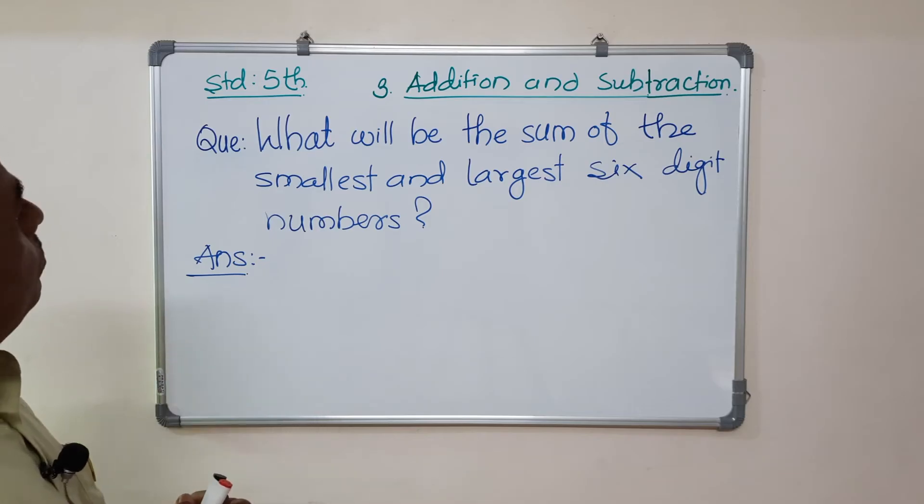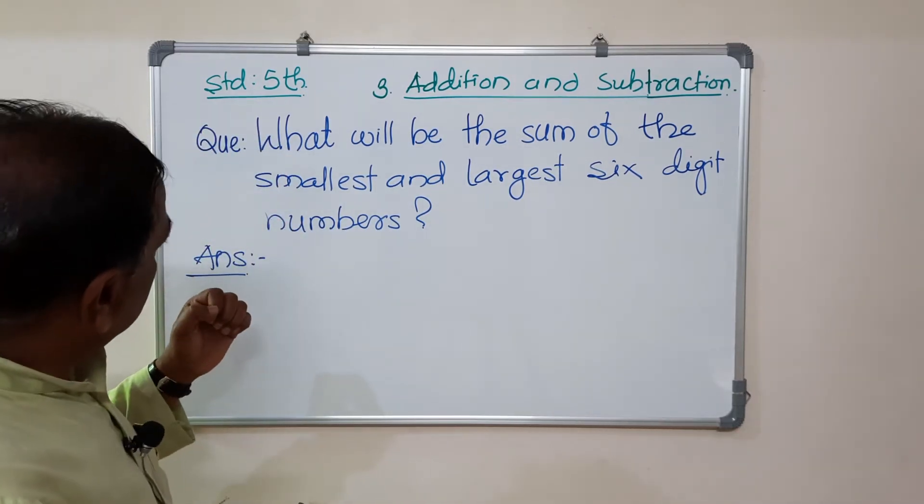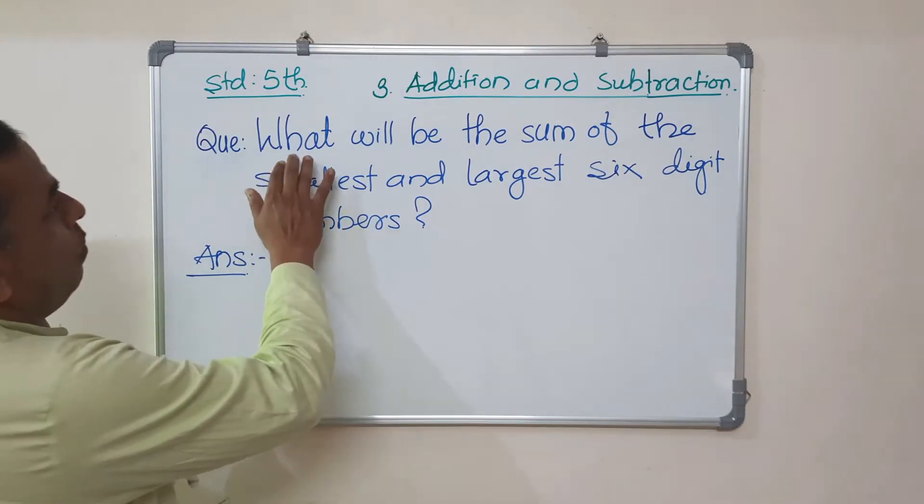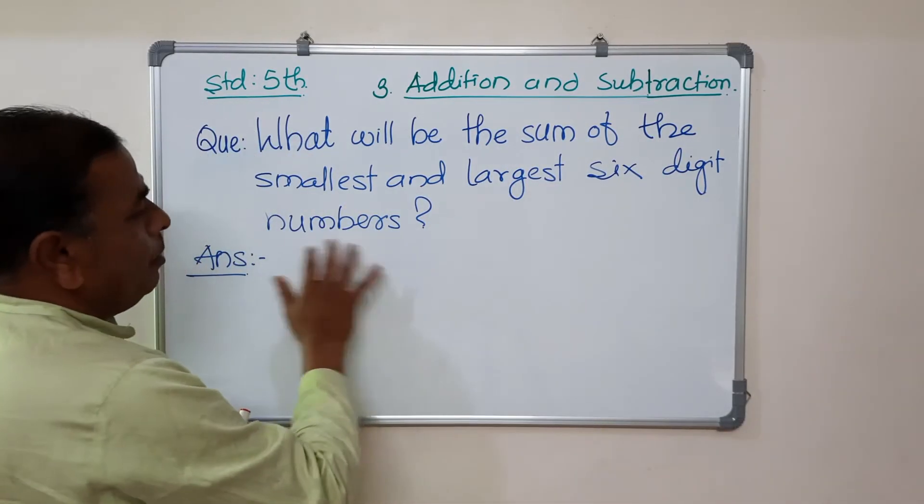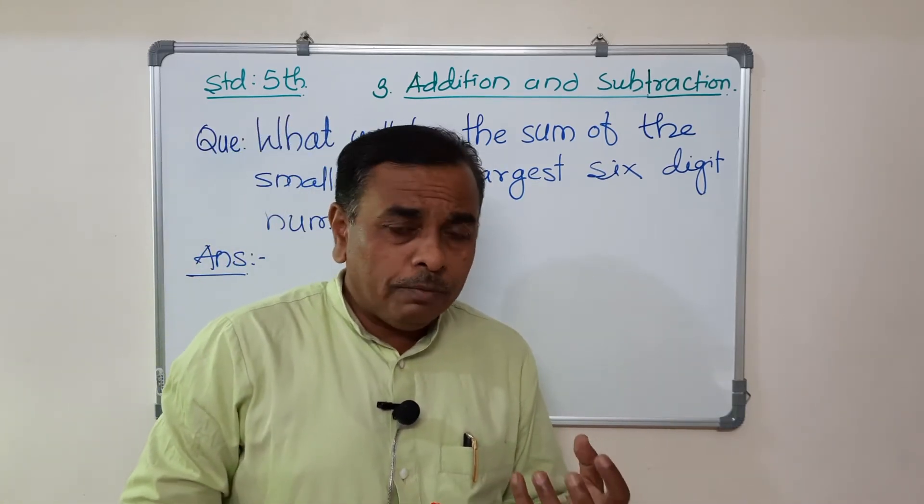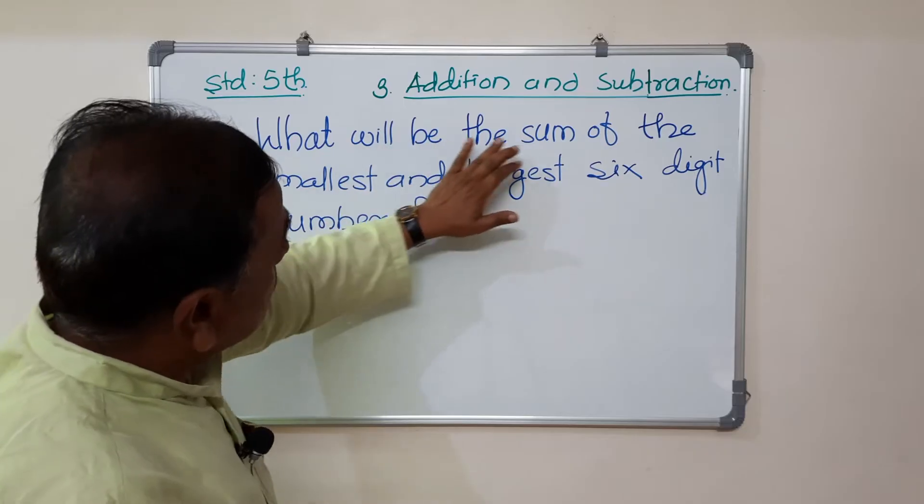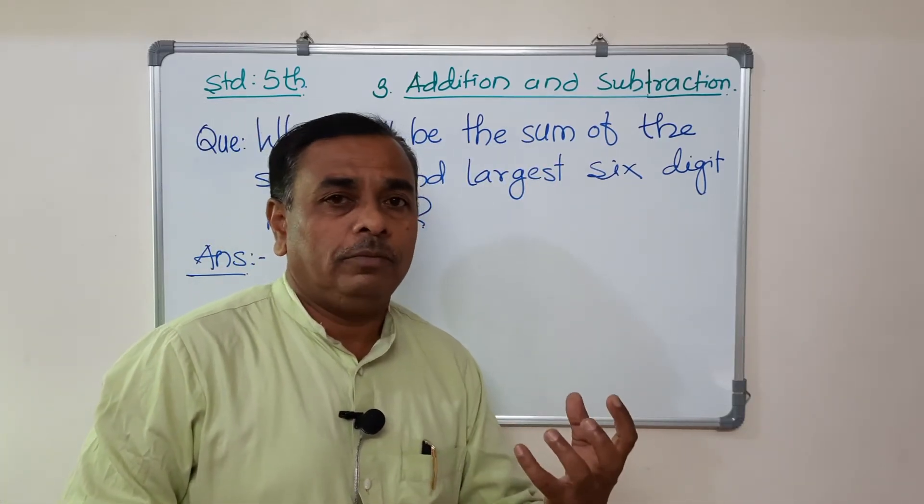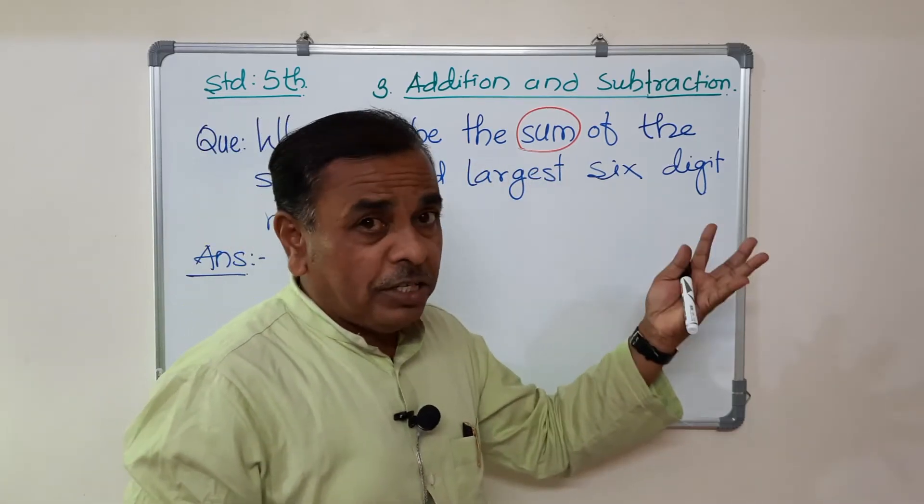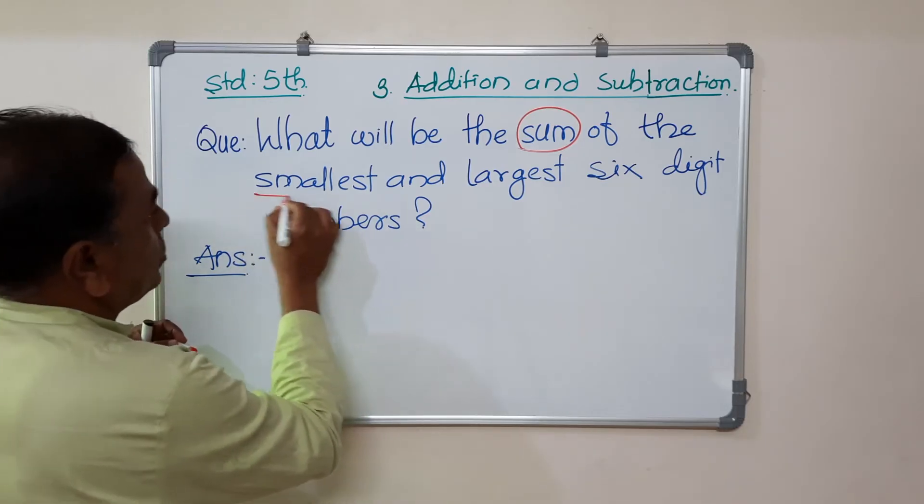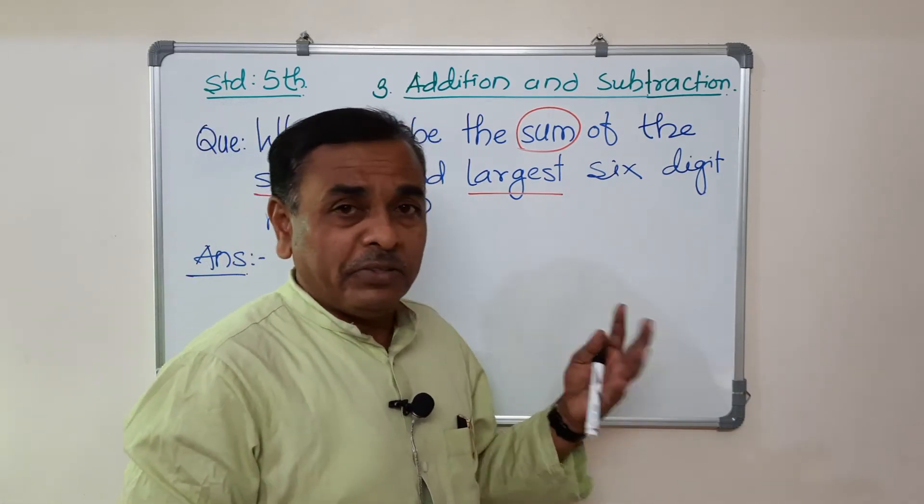Just on the board, this is whiteboard, there is a question. What is the question? What will be the sum of the smallest and largest six digit numbers?